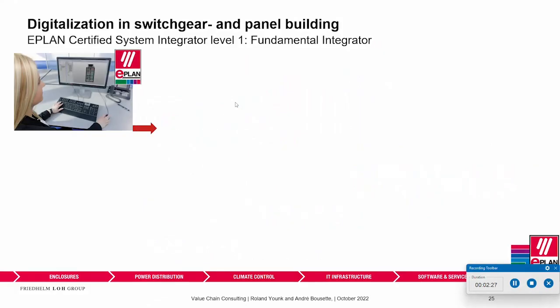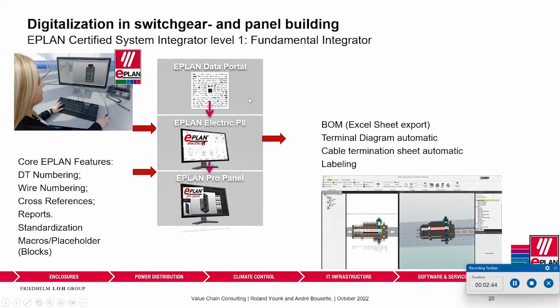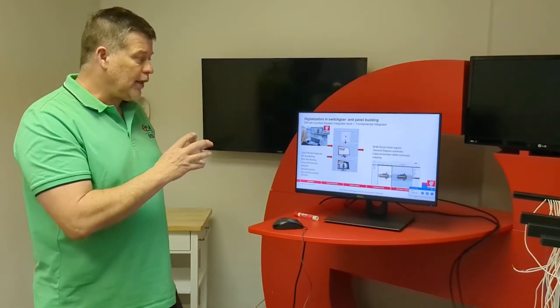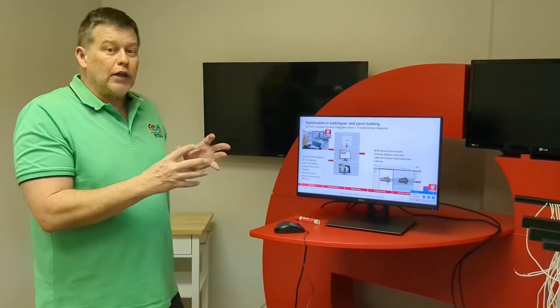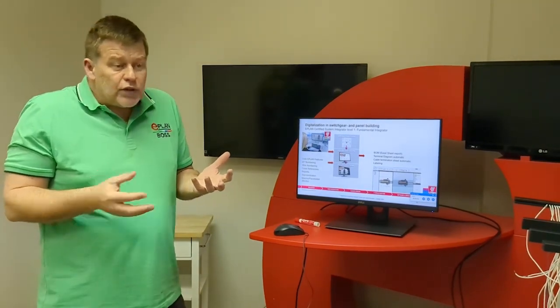You start with Level 1, the Fundamental Integrator. We come and see how you use ePlan, and we expect you to use the core ePlan features: device tag numbering, wire numbering, cross-referencing, reports, and a bit of standardization — macros and placeholders. We also expect you to be able to generate a bill of materials automatically for the supply chain, terminal diagrams, cable termination sheets for manufacturing and field operations, and eventually some labeling. This is what we audit, and we help you use ePlan out of the box and more.